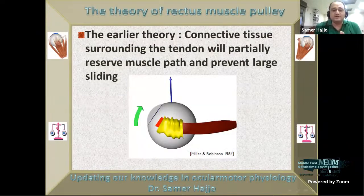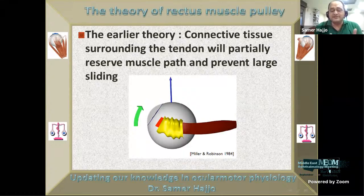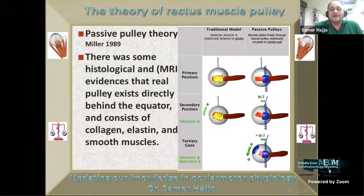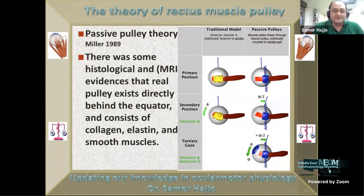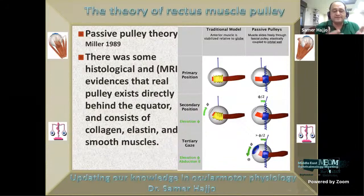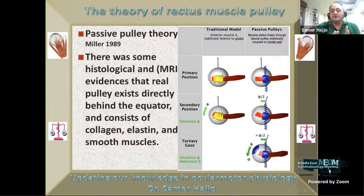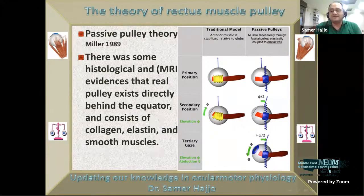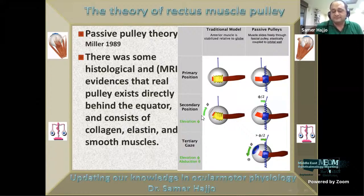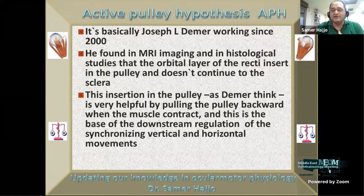There are three important factors in downstream control of eye movements: the role of connective tissue surrounding the tendon of the muscles, the passive pulley theory by Miller 1989, and the active pulley hypothesis by Joseph De Marco in year 2000. The connective tissue surrounding the tendon will partially reserve muscle path and prevent large sliding. Miller found that there is a true pulley or trochlea for every rectus muscle. Each rectus muscle has its own pulley consisting of collagen, elastin, and small smooth muscles, located directly behind the equator.